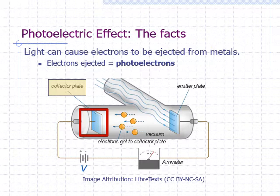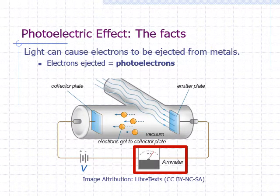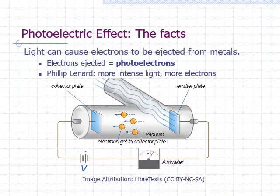The two plates are externally connected with an electrical wire and the current that flows through the wire can be measured with an ammeter. Philip Leonard, a student of Hertz, found that a higher current is produced when the intensity of light is increased. A higher current means that more photoelectrons are produced.